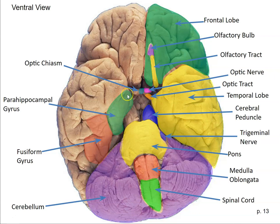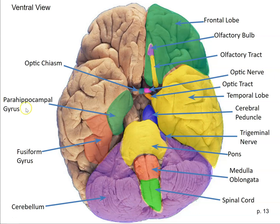Here we have the parahippocampal gyrus. It's in roughly the same spot as the piriform lobe in the sheep, and part of it is what you'd call the human piriform cortex — but in humans it's much, much smaller. There's a little sulcus here, and this little nub sticking out is usually described as the uncus, sometimes considered part of the parahippocampal gyrus. Part of the uncus is the piriform cortex in humans — essentially the cortex devoted to smell, which is relatively small in humans, just as our olfactory bulb is relatively small.